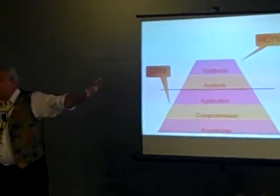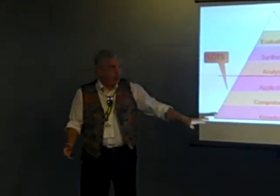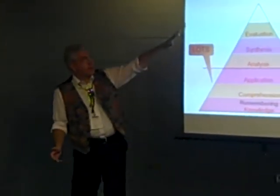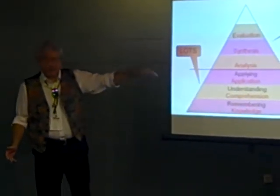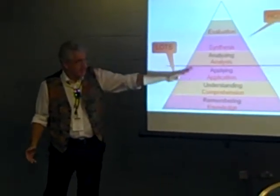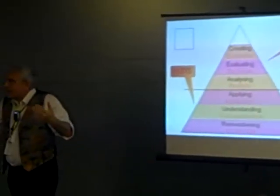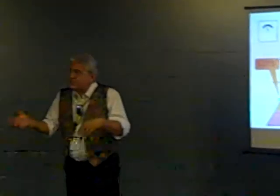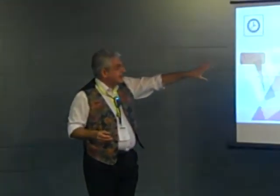The taxonomy can be split into two: lower order thinking skills — LOTS — and higher order thinking skills — HOTS. Whether you want to work with the old Bloom's or the new Bloom's, they both work very nicely within this framework.